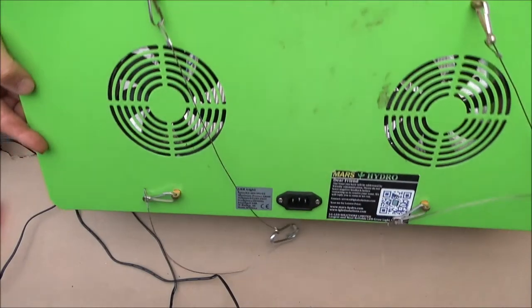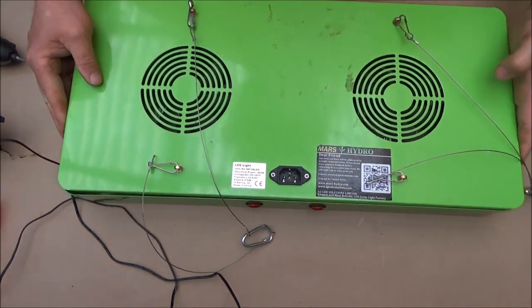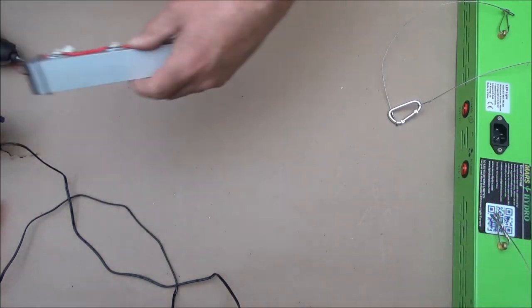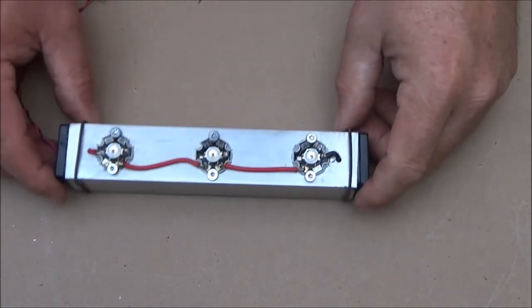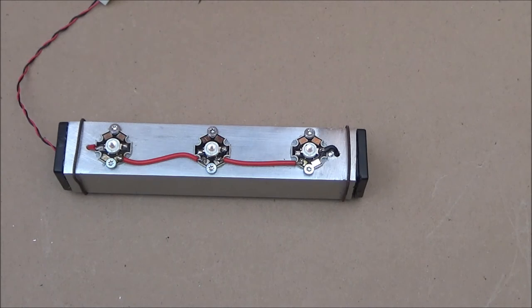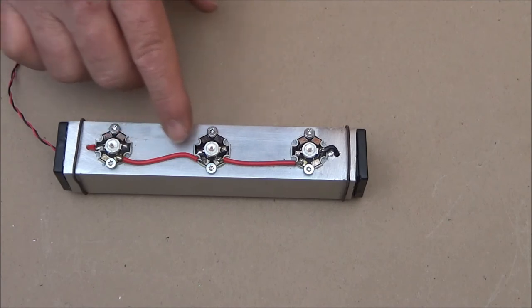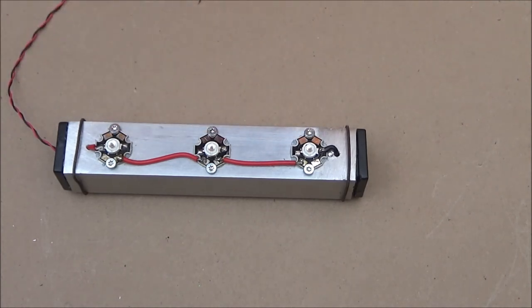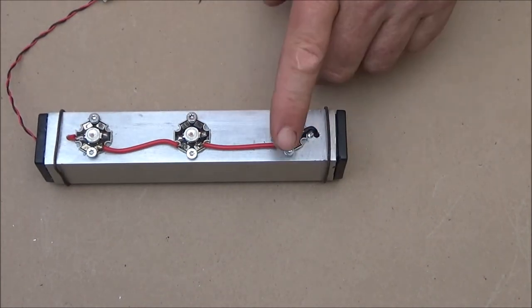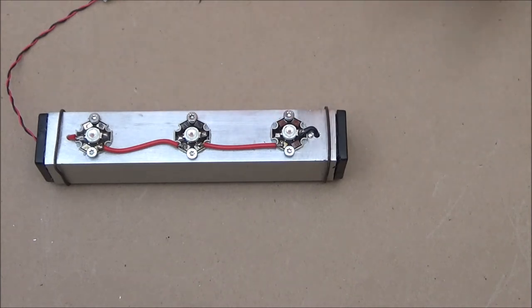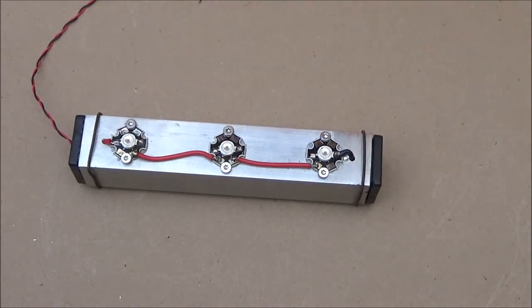There's one other thing I'd like to show you, which again is from Grow Mouse. This little thing here is what Grow Mouse calls a flower initiator. What it is is three 740 nanometer infrared lights. When your lights go out in your tent, these come on for 15 minutes.